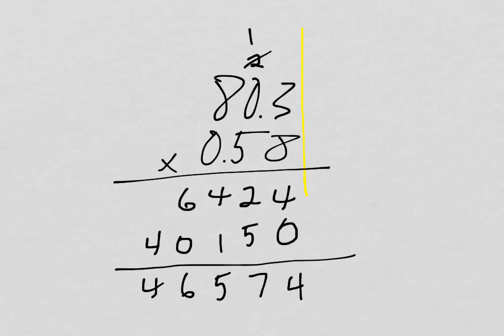Now, the decimal points. I am not done. 80.3 times 0.58 cannot be 46,574. If you think about it, 80.3 is just about 80, and 0.58 is less than one. So that number, the product, is actually going to be smaller than 80. 46,574 is way more than a reasonable answer would be. So what's wrong here? Well, I haven't dealt with those decimal points.